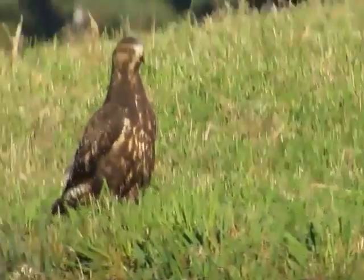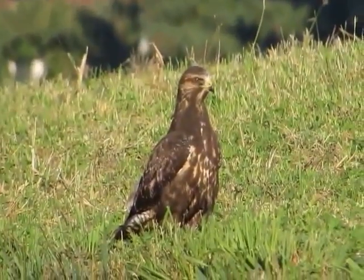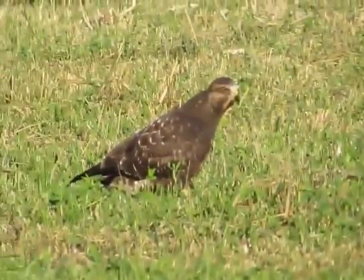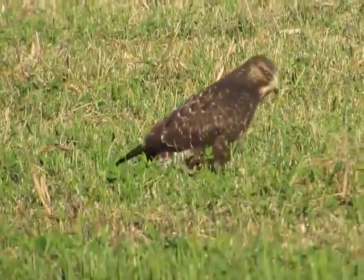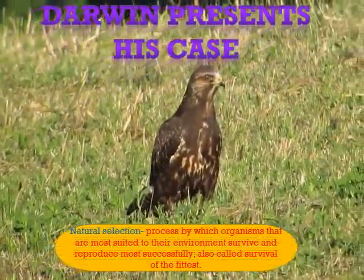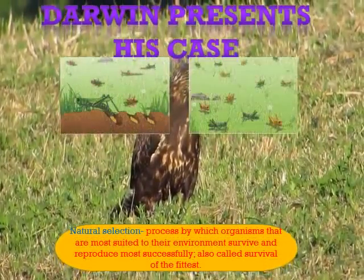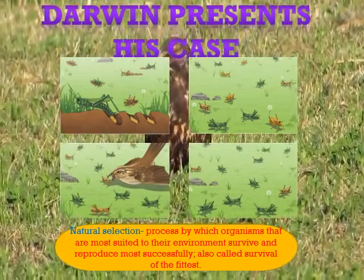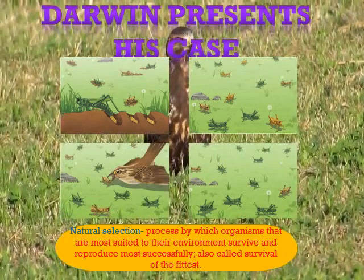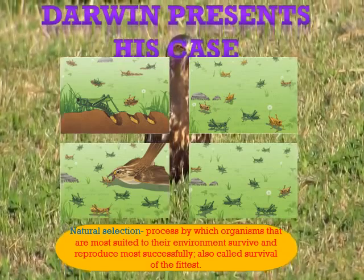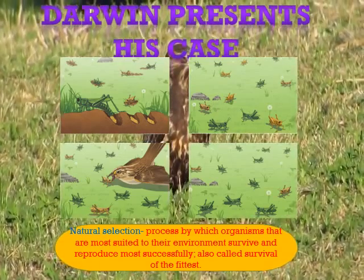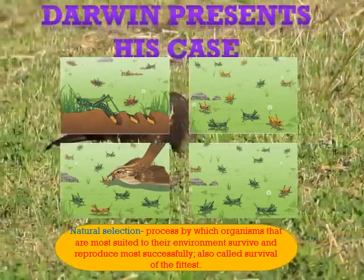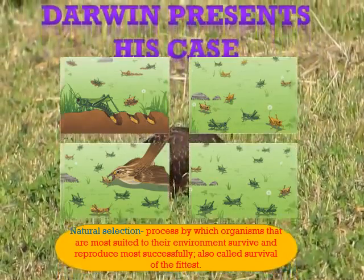Darwin named his mechanism for evolution natural selection because of its similarity to artificial selection. Natural selection occurs in any situation in which more individuals are born than can survive, there is natural heritable variation, and there is variable fitness among individuals. Darwin proposed that over many generations, adaptation could cause successful species to evolve into new species.